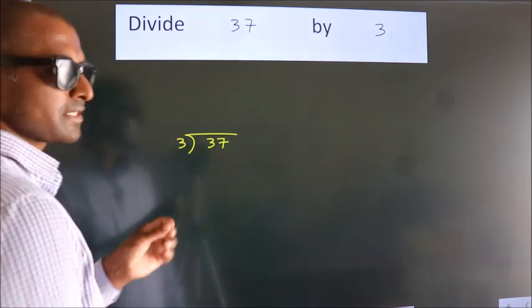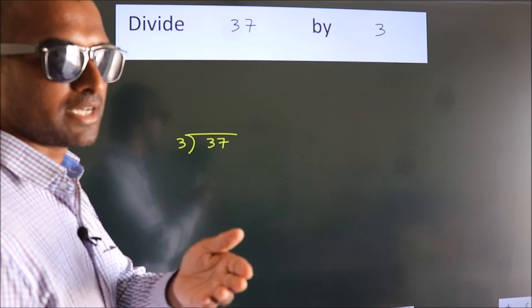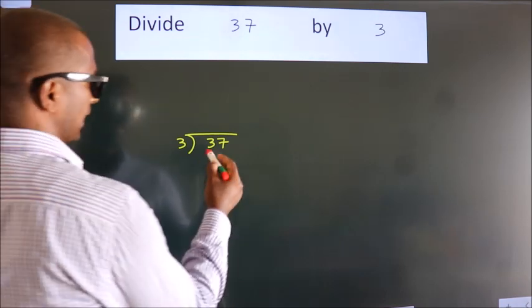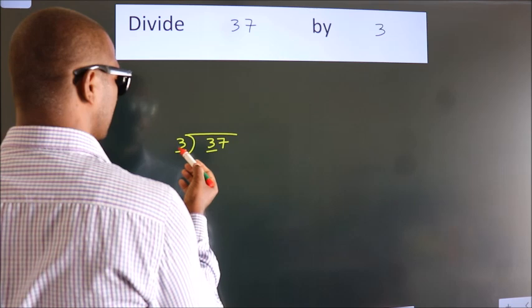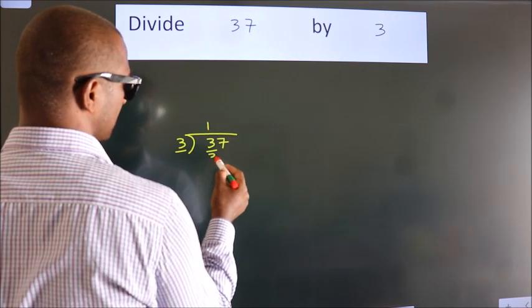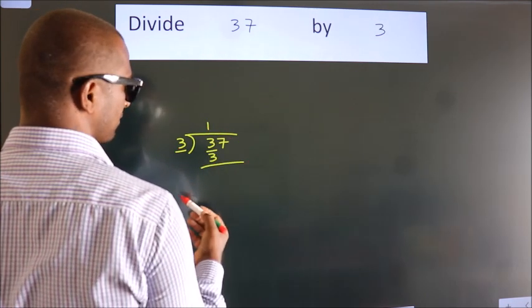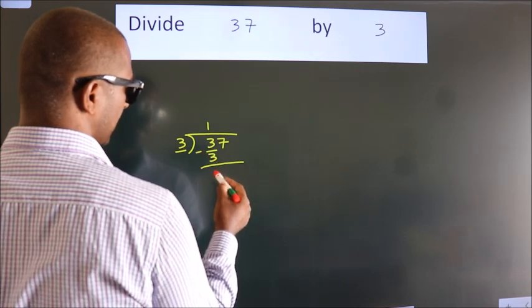This is your step 1. Next, here we have 3, here 3. When do we get 3? In 3 table, 3 once, 3. Now, we should subtract, we get 0.